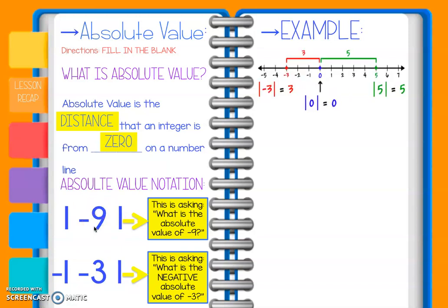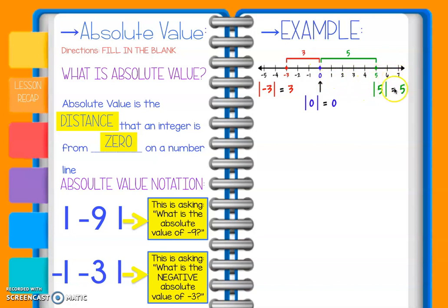So let's take a look at this number line. This question is saying: what is the absolute value of negative 3? If we count 1, 2, 3 — it's 3 spaces away, so the answer is 3. This question is saying: what is the absolute value of positive 5? We start at 0, count 1, 2, 3, 4, 5 — it's 5 spaces, so our answer is 5. See how both of those are positive? It's because we're talking about distance.